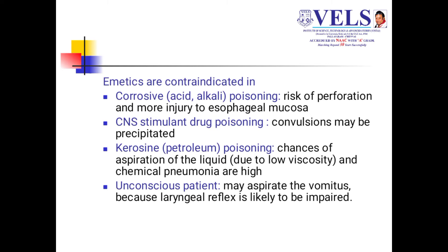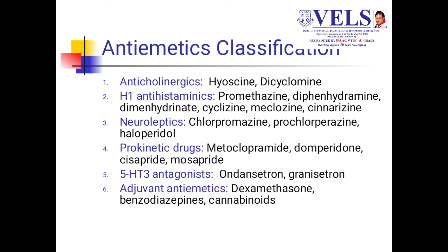Emetics are contraindicated in corrosive poisoning, CNS stimulant drug poisoning, kerosene poisoning, and unconscious patients. Coming to anti-emetics — we have already seen the emetic center and its receptors. The targets to stop emesis include: muscarinic receptors (anticholinergics such as hyoscine and dicyclomine), H1 receptor antagonists (promethazine, diphenhydramine, cyclizine, meclizine), neuroleptics (chlorpromazine and haloperidol), and prokinetic drugs (metoclopramide, domperidone, cisapride).